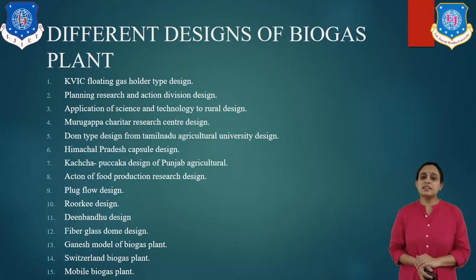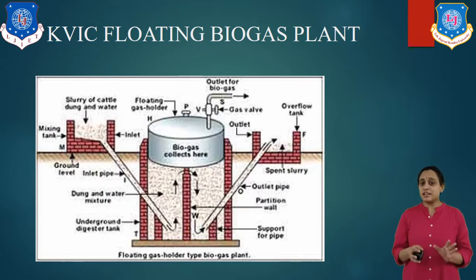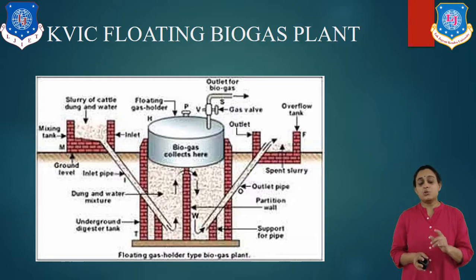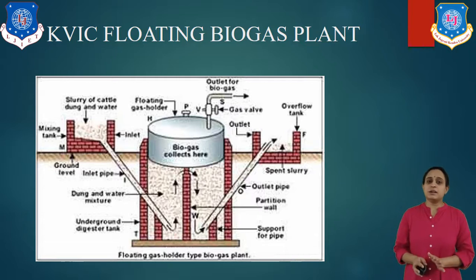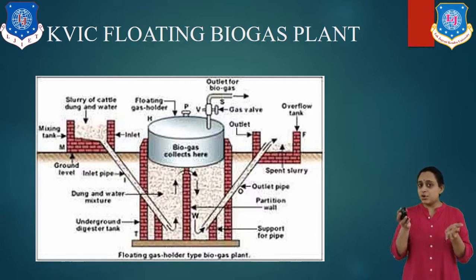Let us study the KVIC floating biogas plant. Here is the diagram, and students have to remember that if it is asked in your examination, you have to draw the diagram. In this type of biogas plant, the gas is collected in the floating drum which is kept on the digester — this is a floating drum type of design.